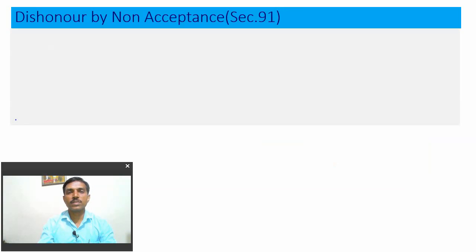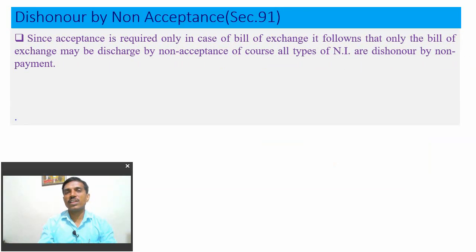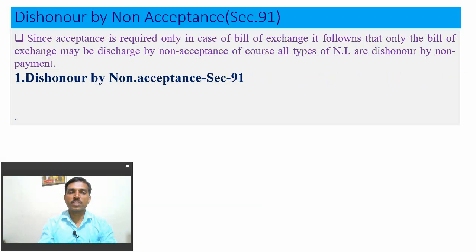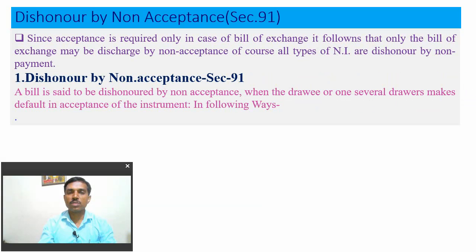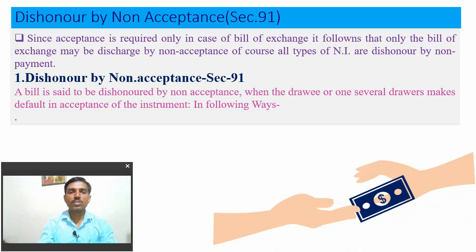Dishonor by non-acceptance is the first type, under Section 91. Since acceptance is required only in the case of a Bill of Exchange, only the Bill of Exchange may be dishonored by non-acceptance. All types of negotiable instruments are dishonored by non-payment. A bill is said to be dishonored by non-acceptance when the drawee or one of several drawees makes a default in accepting the instrument in the following ways.